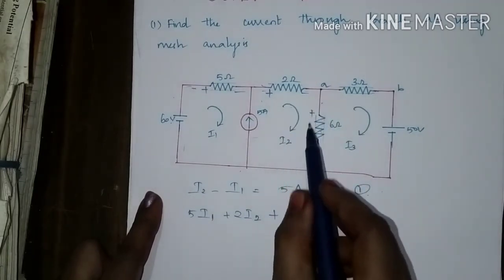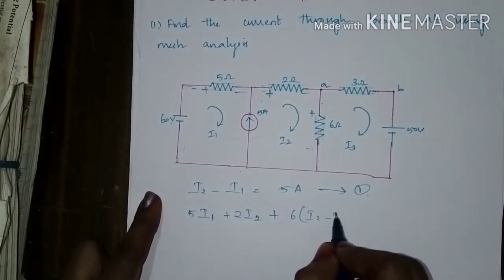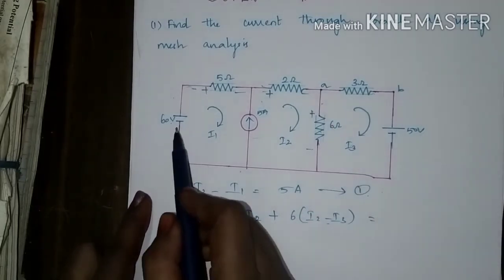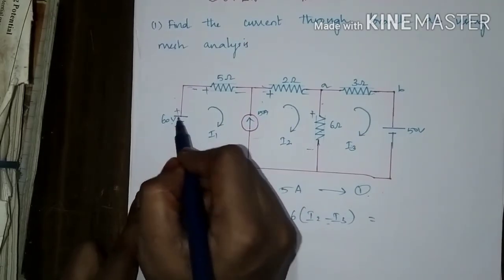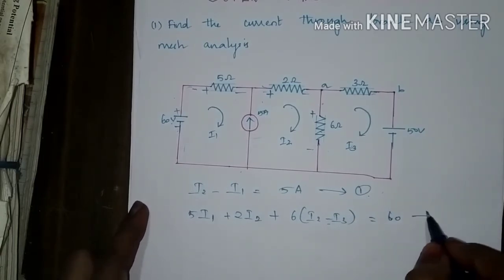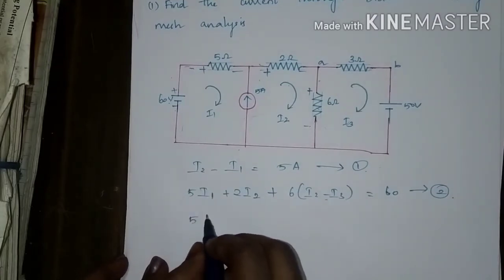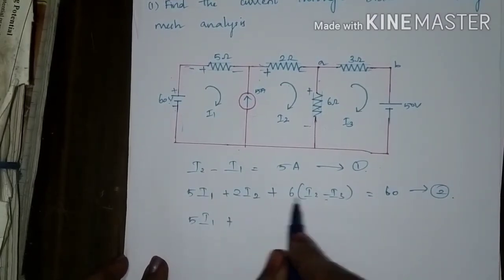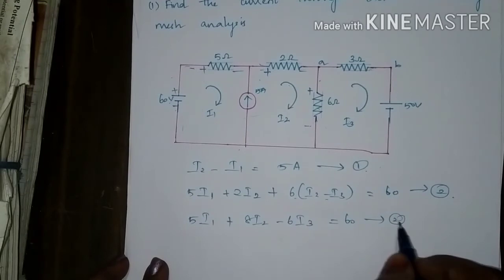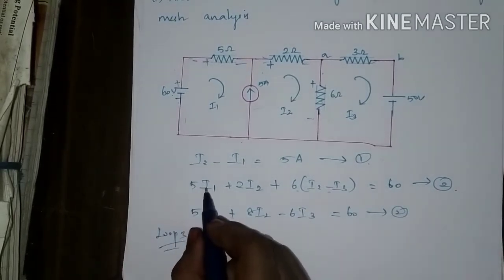Since I2 flows top to bottom it produces a potential fall, and I3 flowing bottom to top produces a potential rise. So the 6-ohm term is 6(I2 minus I3). On the right side we have plus 60 volts. After simplification, combining the 2 and 6 ohm terms gives 8I2, so the equation becomes: 5I1 + 8I2 - 6I3 = 60. Take this as equation 2.